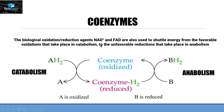The next molecules that couple catabolism with anabolism are coenzymes, which do so by oxidizing and reducing themselves. They shuttle energy from the unfavorable oxidations that take place in catabolism to the unfavorable reductions that take place in anabolism. Let's discuss these coenzymes separately.